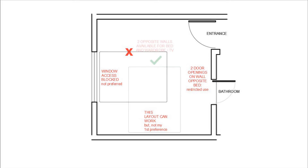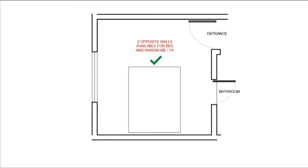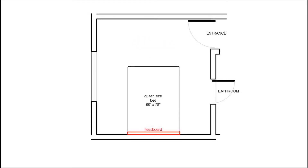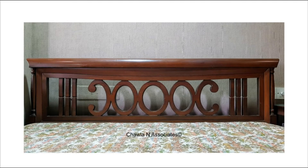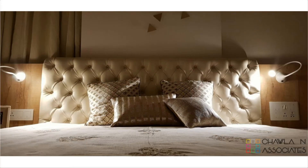Although that layout can be worked out, it's definitely not a preference. Placing the bed on this wall seems most appropriate since we have two opposite walls available — one for the bed and one for the wardrobe and TV unit. Let us add a headboard to this bed. You can have many varieties of headboards, starting with a solid peak wood handmade customized headboard or a cushioned Chesterfield headboard.